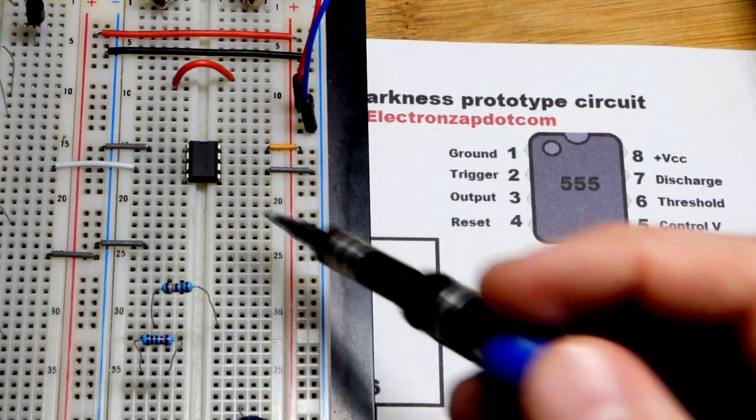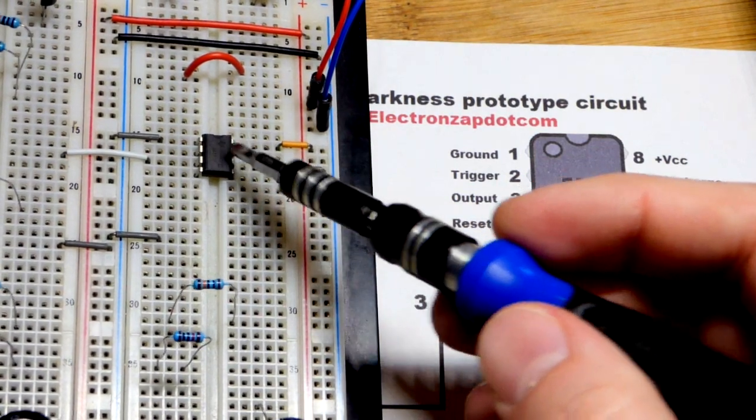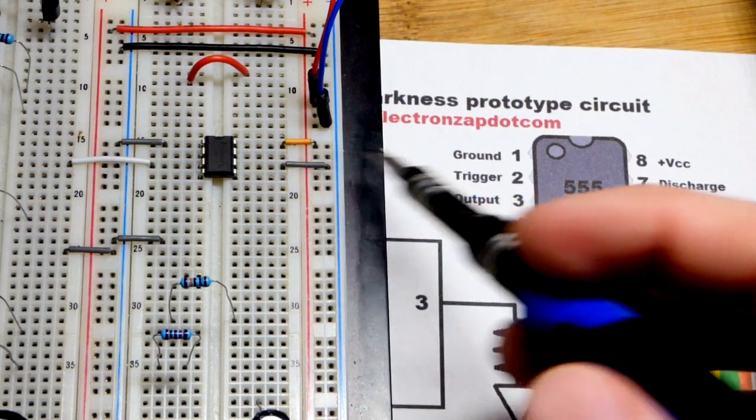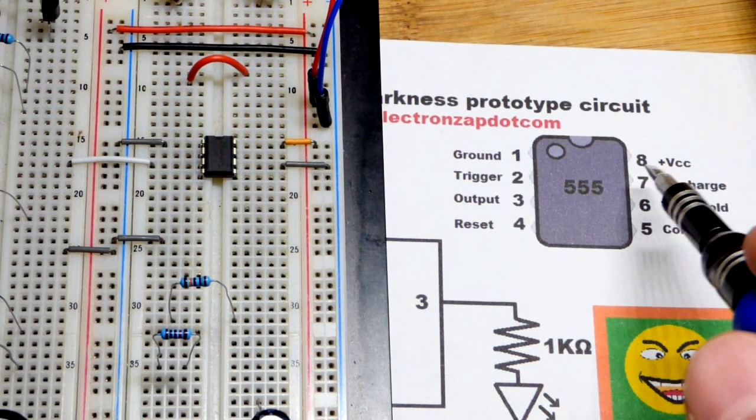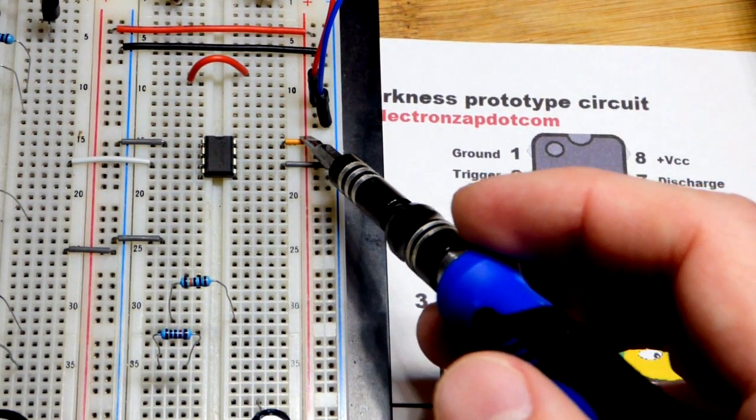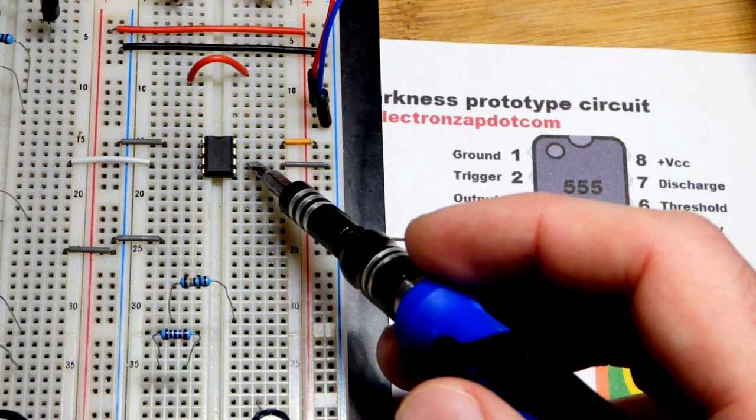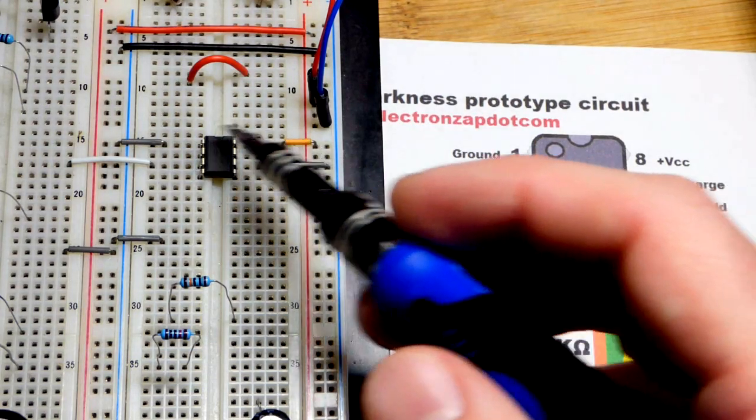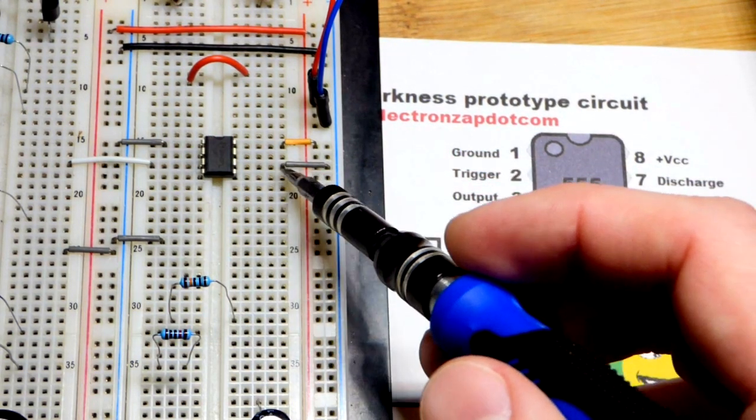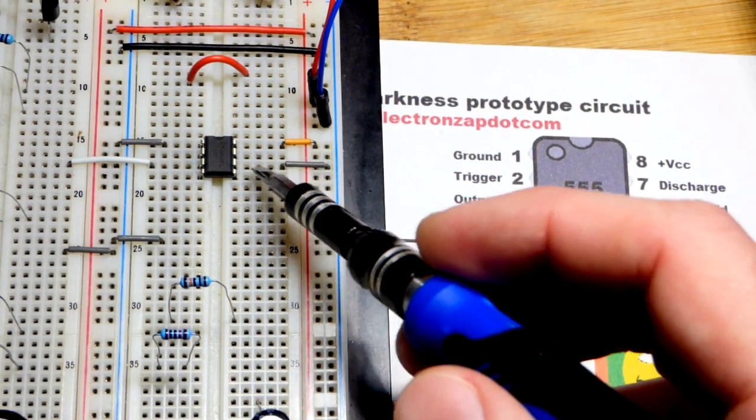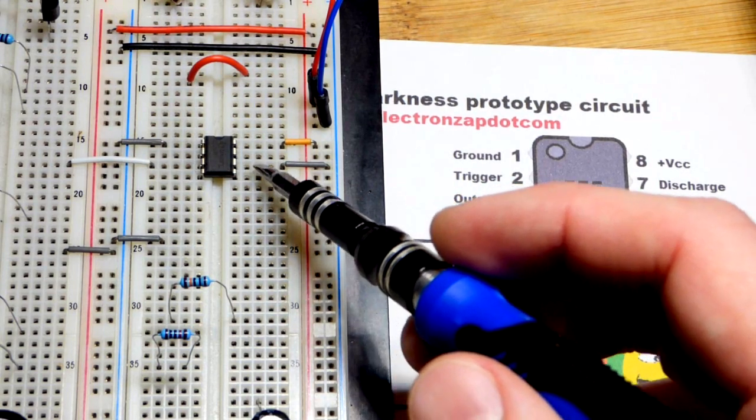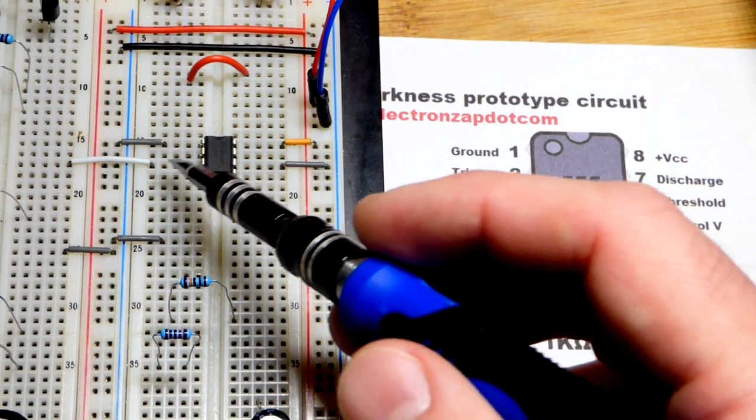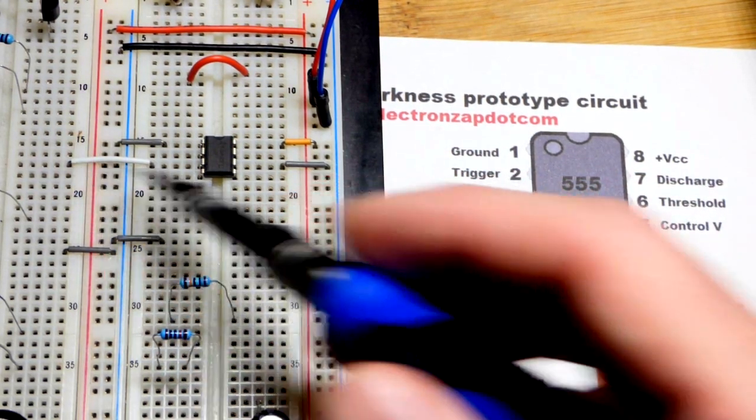So now to begin with, we're using the NE555 right there. The ground pin is pin number one right there. And the VCC, the positive side of the power supply pin is pin eight. So we're powering it. Pin number six here is the threshold pin. We don't want it to do anything. It's waiting for two thirds of the power supply voltage or more. And we put it to the negative rail. That is much less than two thirds of the power supply voltage. It's as far as you can get. And so that prevents it from doing anything.